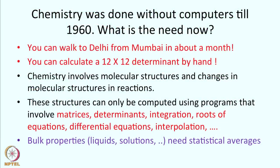These structures can only be computed using programs that involve matrices, determinants, integration, roots of equations, differential equations, interpolations, and so on. Bulk properties like entropy, energy, and enthalpy can all be calculated as statistical averages over properties of molecular systems. The final goal of this course is how to compute things of interest in chemistry using techniques like statistical averaging.